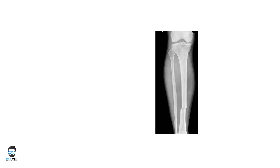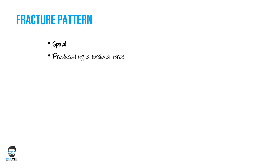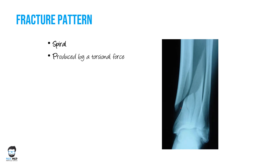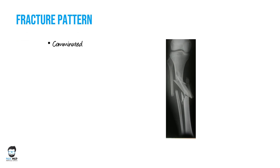Now let's look at fracture patterns. A transverse fracture goes straight through the bone and is usually produced by distracting or bending force. A spiral fracture is produced by torsional force and runs in a spiral pattern. A butterfly fracture has an extra separate fragment and is usually produced by pure bending force. A comminuted fracture is where the bone is broken into many pieces, typically a high-energy injury from combined forces, commonly seen in motor vehicle accidents.